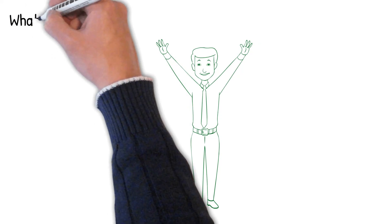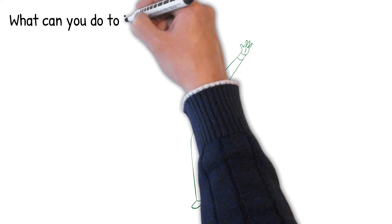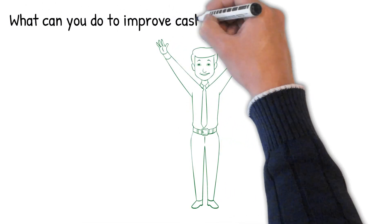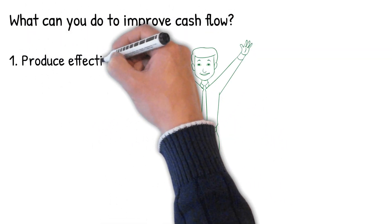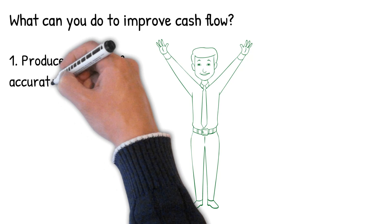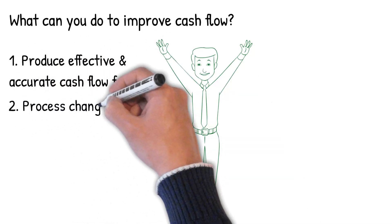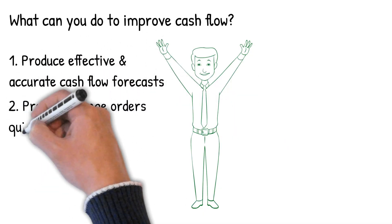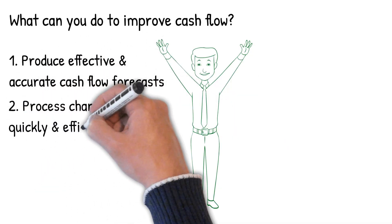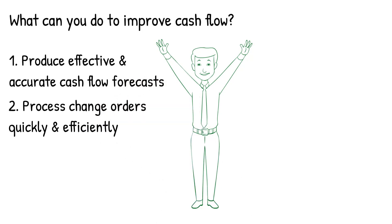So how can you improve cash flow? Well, let's start with the obvious: producing effective and accurate cash flow forecasts. Process change orders quickly and efficiently — agreeing additional works and payment is essential to keeping your cash flow positive. The longer disputes over additional work carry on, the more likely it is to affect the cash flow.